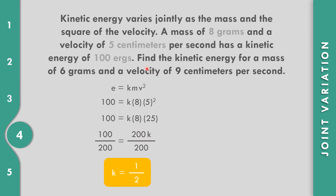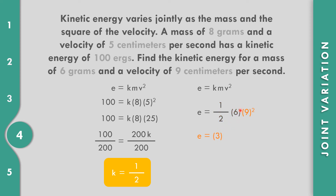Now find the kinetic energy for a mass of 6 grams and a velocity of 9 centimeters per second. Using K equals 1 half: E equals (1/2) times 6 times 9 squared. Simplifying, 6 divided by 2 equals 3, and 9 squared equals 81. So E equals 3 times 81, which equals 243 ergs.